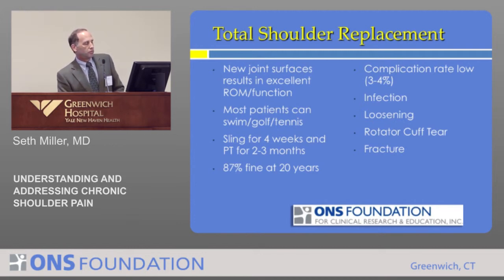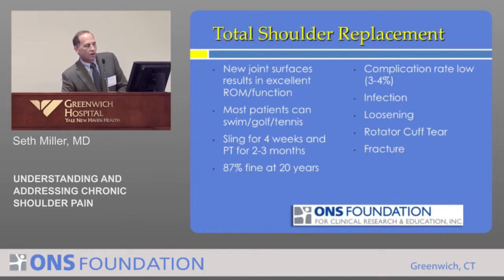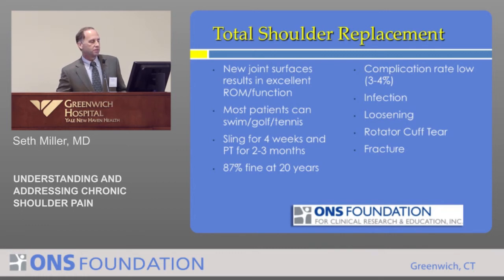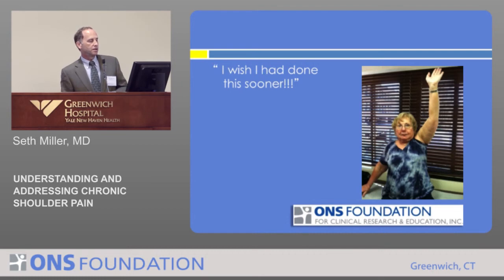Most patients return to non-stressful sports like swimming, golf, and tennis. They wear a sling for about a month and do physical therapy for two to three months. In terms of longevity, studies out over 20 years show 87% of these replacements are working fine at 20 years — an excellent survivorship. Complication rates are low but not zero, including infection, prosthesis loosening, rotator cuff tears, and occasional falls. Most commonly, I hear patients say they should have done the operation sooner, because pain relief is quite rapid — within a couple of weeks after surgery, patients are already sleeping well and feeling pretty good.